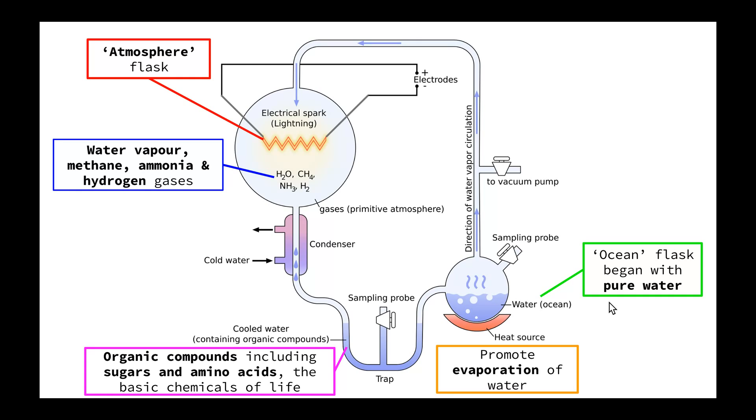The heat was to represent the heat in the atmosphere, because there was no ozone layer stopping the radiation from the sun. As the water evaporated, the vapors headed up this chamber here and into this chamber at the top. This chamber was designed to represent the atmosphere of early Earth. Urey and Miller placed a number of gases in there.